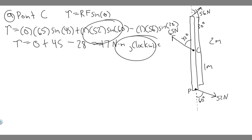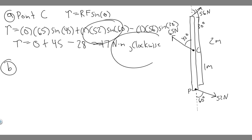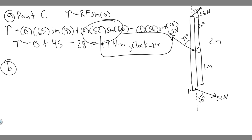Let's go ahead and move on to B now. That was the net torque at point C. So B is going to be at point P, and point P is this point right here. We're going to do the same exact thing — calculating all the torque at each point and then adding them up. Let's go ahead and start with point P.